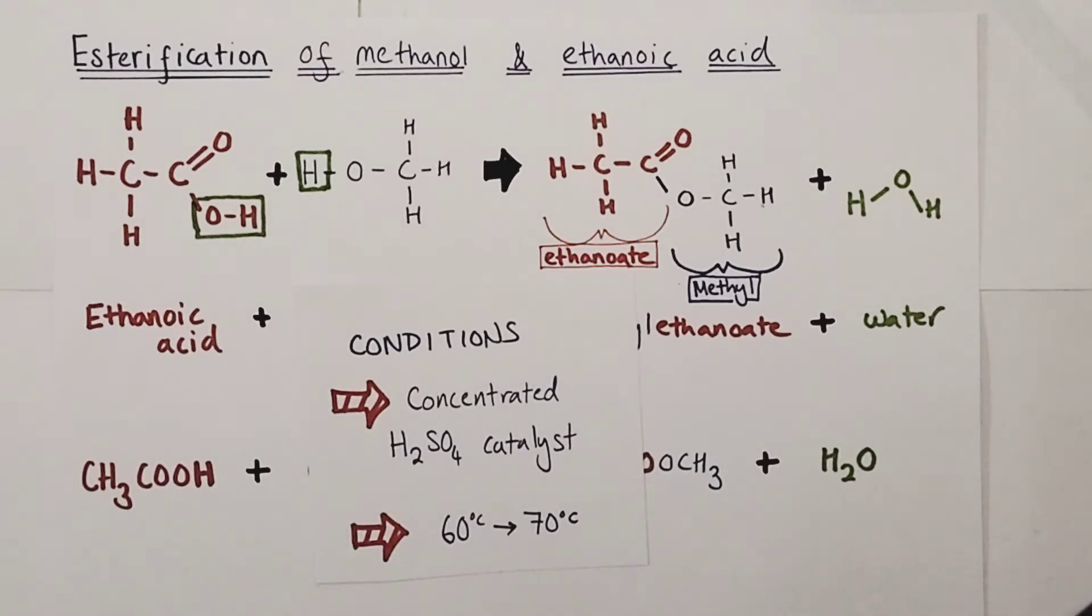So a small molecule is eliminated, that being water formed from these atoms being lost from the two molecules here, and then the remaining parts of the ethanoic acid joined directly onto the remaining parts of the methanol at that CO point to create our ester linkage in the new ester.